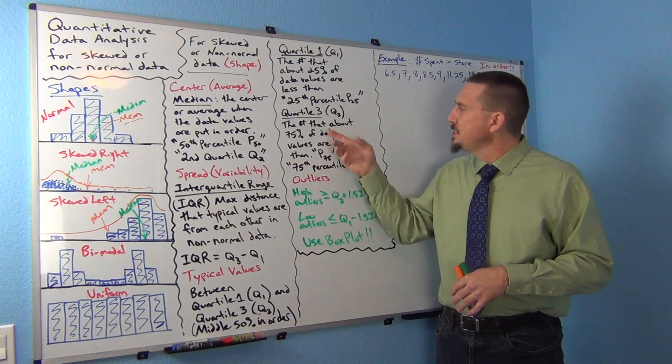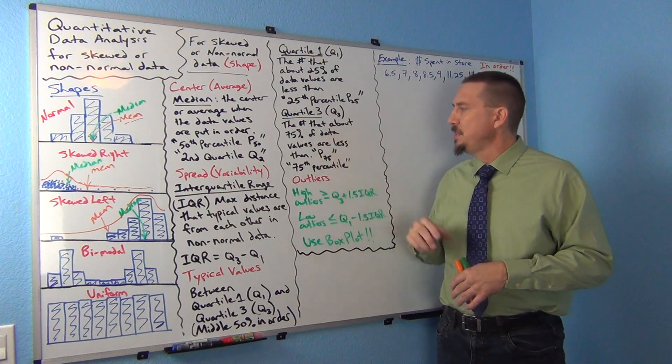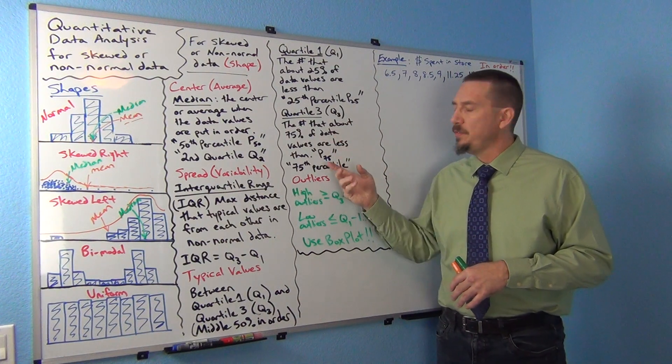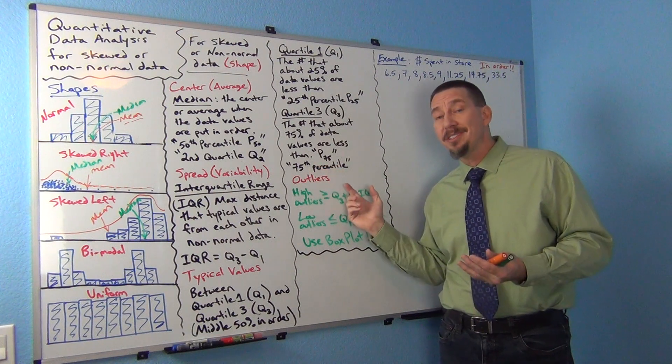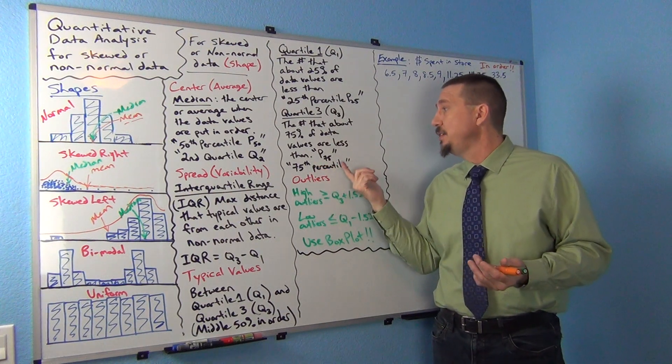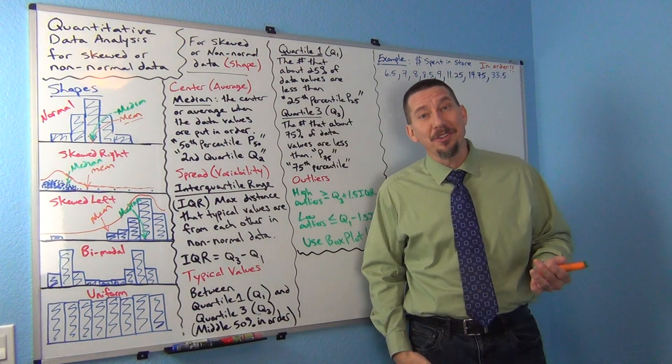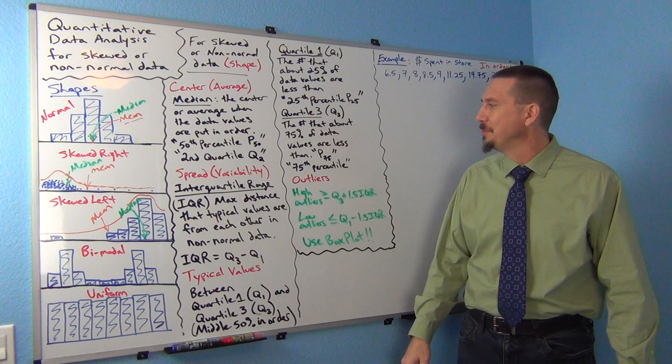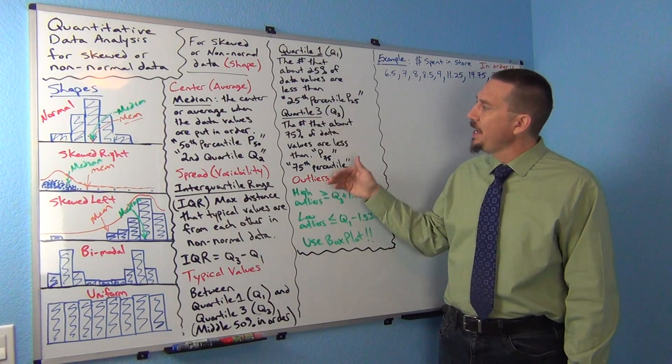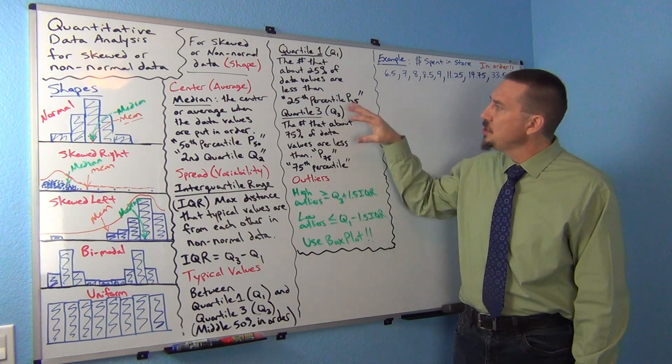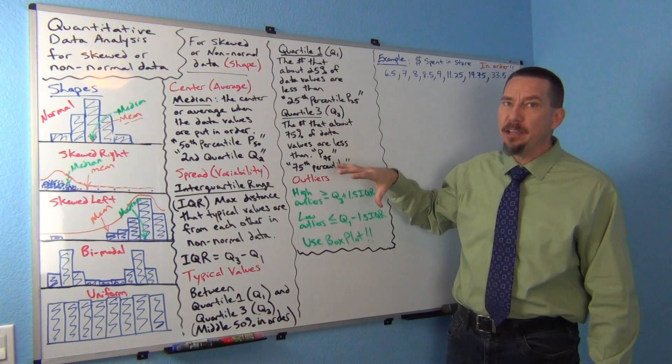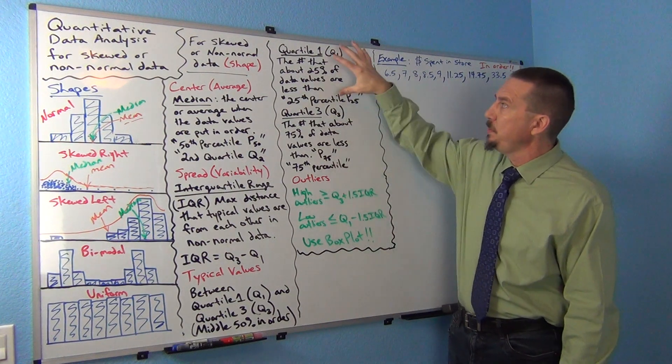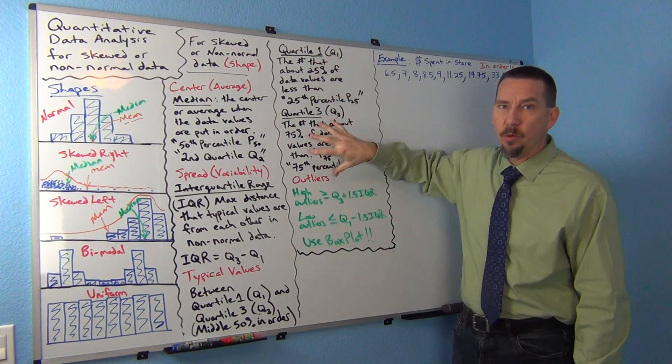Quartile 3 is the number that about 75% of the data values are less than. It's also referred to as the 75th percentile or P75. If I have three quarters in my pocket, that's 75 cents - that's a good way to remember it. These are dividers. We would say typical values in a non-normal data set will be between quartile 1 and quartile 3.